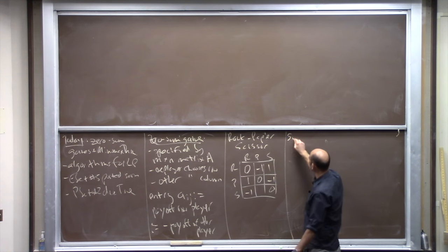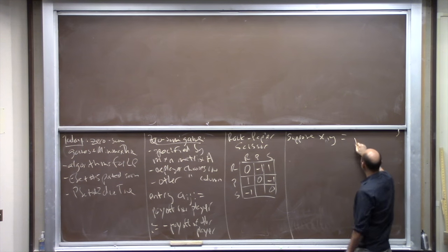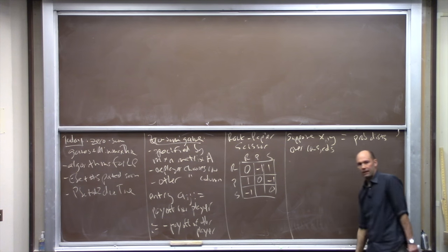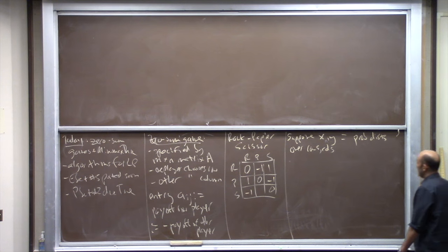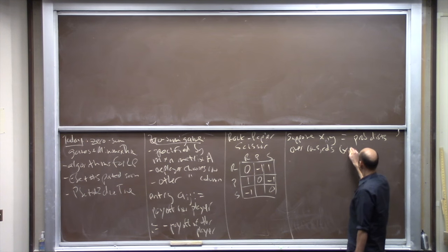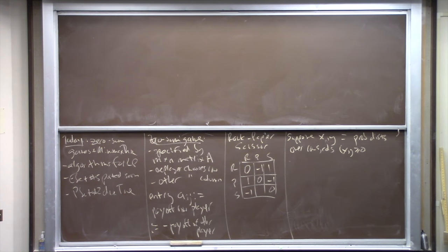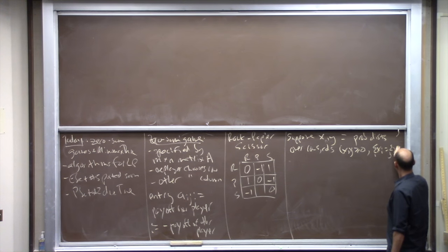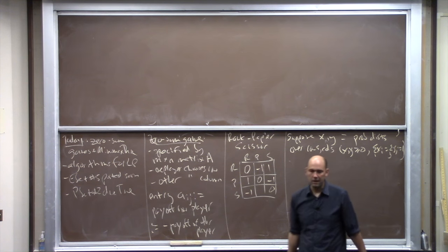Suppose X and Y are probability distributions over the rows and columns respectively. Think of X and Y as vectors — X indexed by the rows, Y indexed by the columns. Each entry of X is the probability with which the row player will choose that particular row, so probabilities are non-negative and sum to one. Fix a way in which the row player randomizes over the rows and the column player randomizes over the columns; they randomize independently.